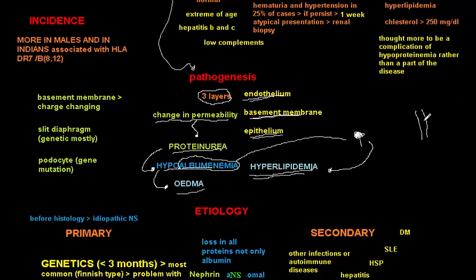Edema occurs because, in a blood vessel with less protein — hypoalbuminemia — the oncotic pressure will push fluid into the third space, forming edema. There are many mechanisms that explain the development of edema in nephrotic syndrome, but this is the most important one.